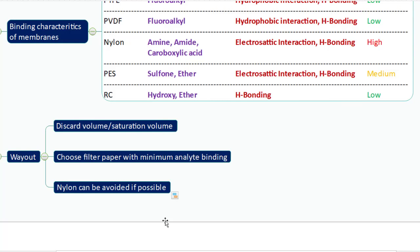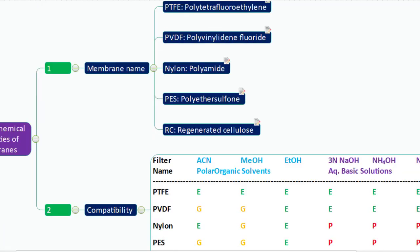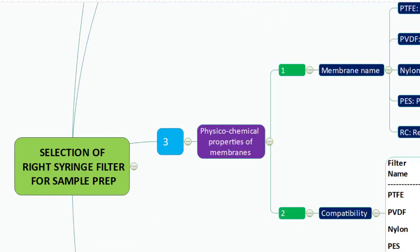Choose the filter paper with minimum analyte binding by evaluating at least three filters — nylon, PVDF, and PTFE — and select the one with the lowest binding. My advice is to avoid selecting nylon filter paper as your preferred partner in the filtration system. If nylon is already defined in an existing protocol, that is acceptable, but when defining a new method, try to avoid nylon as much as possible. Thank you for watching, and I will see you soon with more useful and informative videos.